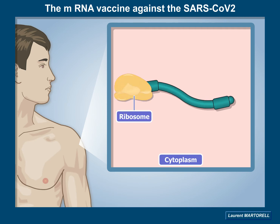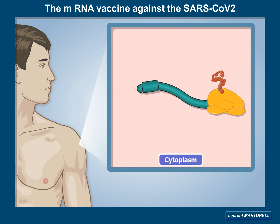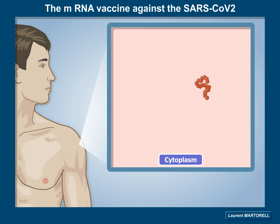Ribosomes come into play to proceed with the translation of each mRNA, so that new S-proteins are synthesized. Newly made S-proteins then fold in order to get their functional conformation.